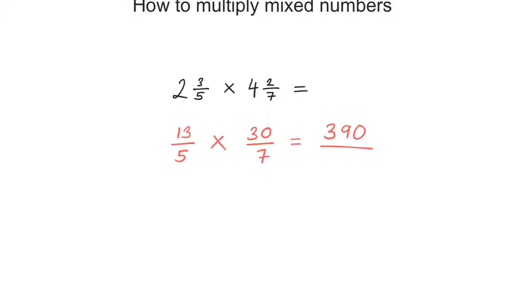And the denominator: 5 times 7 is 35, so the base will be 35. Can I simplify this? Well, actually yes I can.